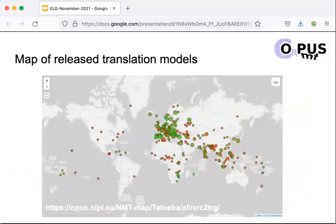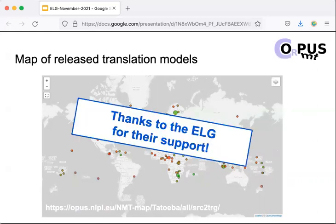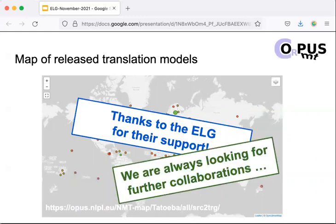Our efforts will continue and we aim at a larger coverage of the world's languages. An interactive map can show the current status of our development with an indication of translation quality and language coverage. So stay tuned for updates and additional releases. We would like to thank the European Language Grid for their support, and we also welcome ideas for further collaborations. Please stay in touch. Thank you very much.